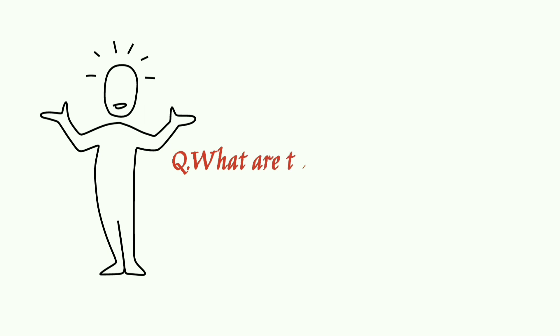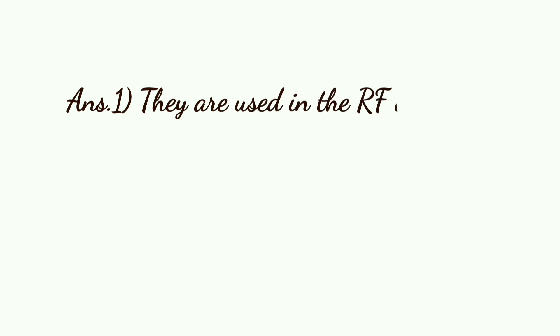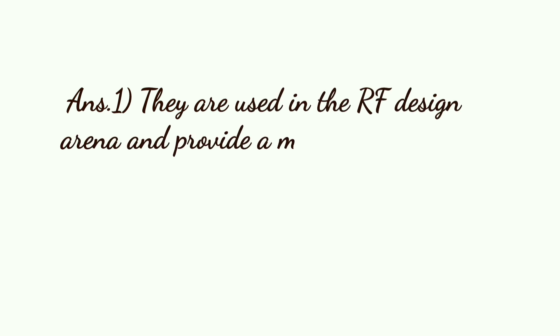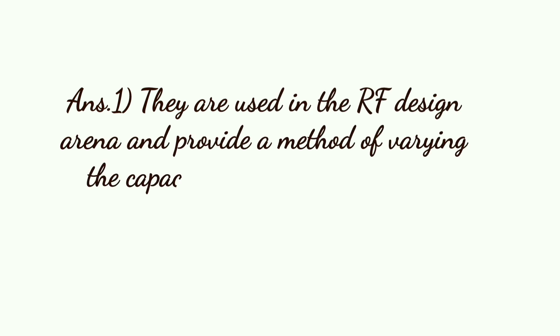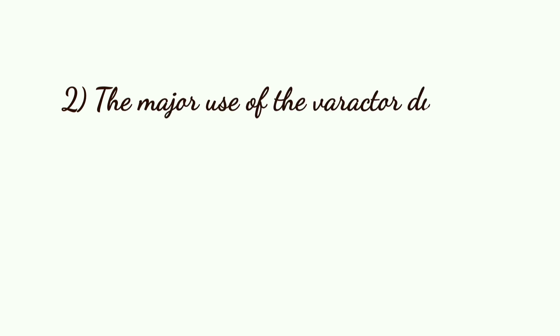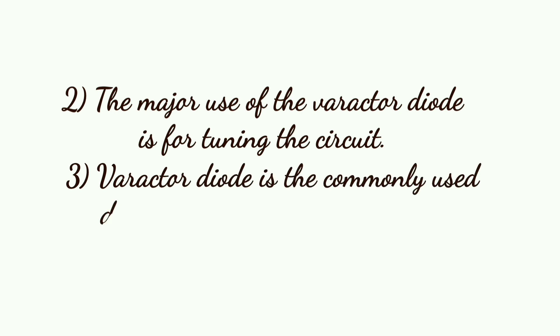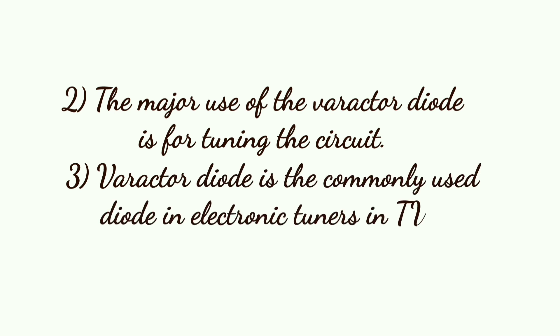What are the applications of Varactor Diode? They are used in RF design and provide a method of varying the capacitance within a circuit while applying a control voltage. The major use of Varactor Diode is for tuning the circuit. Varactor Diode is a commonly used device in electronic tuners in TVs.